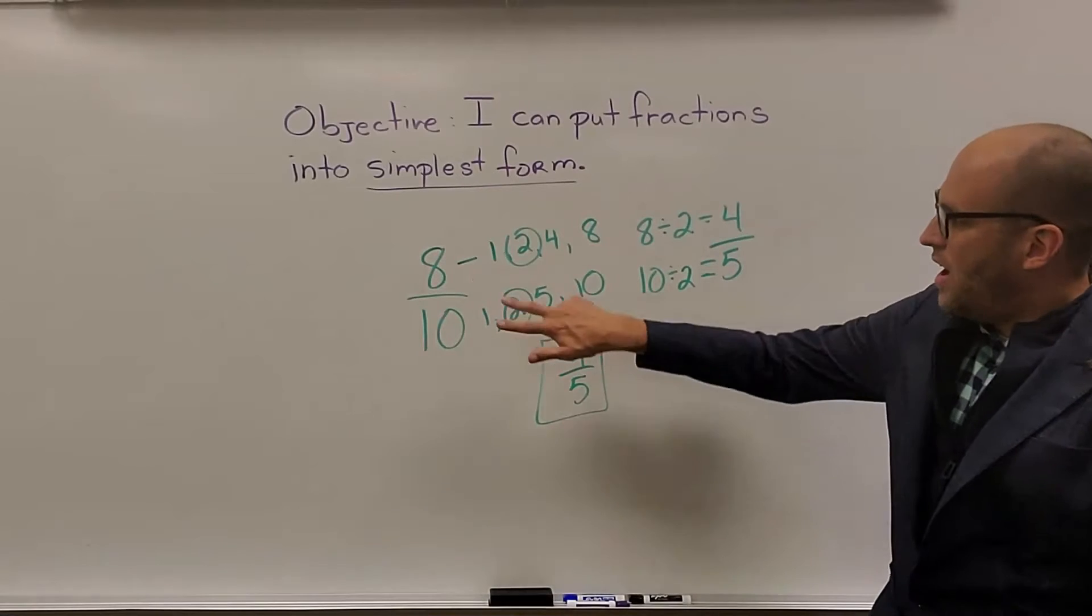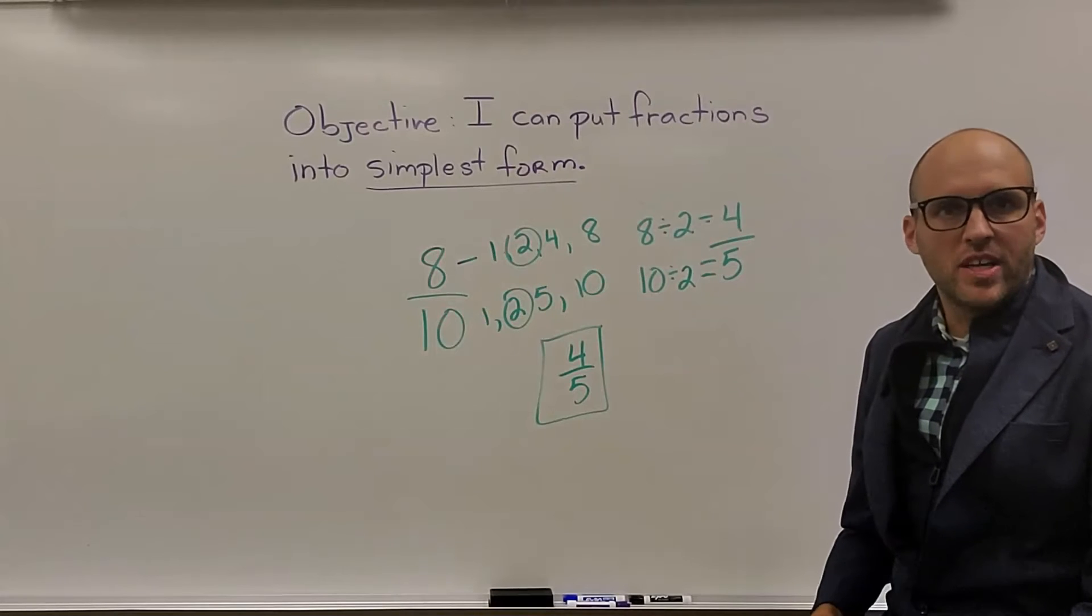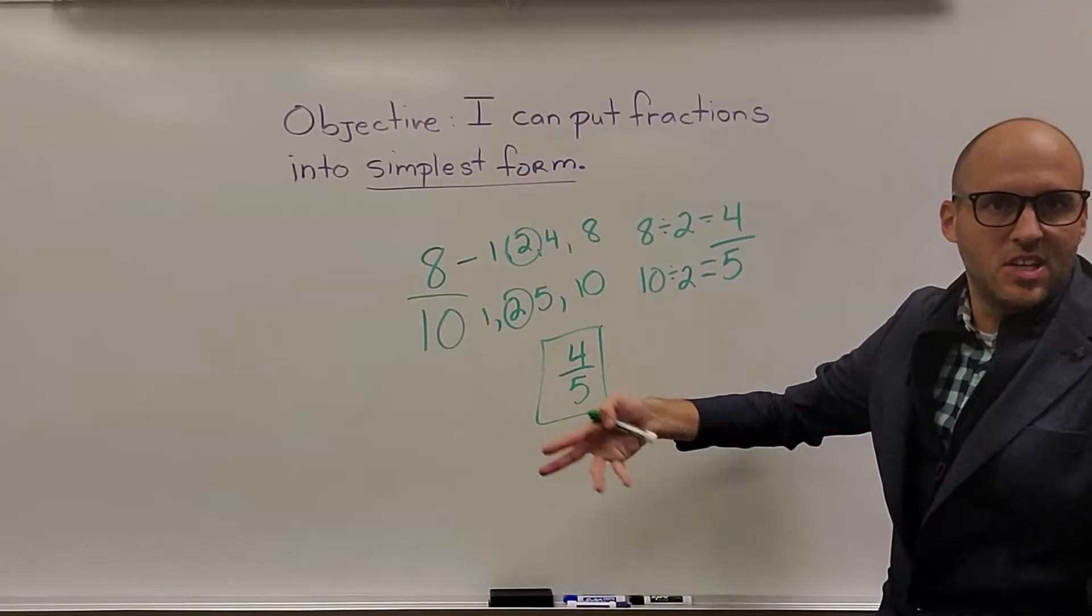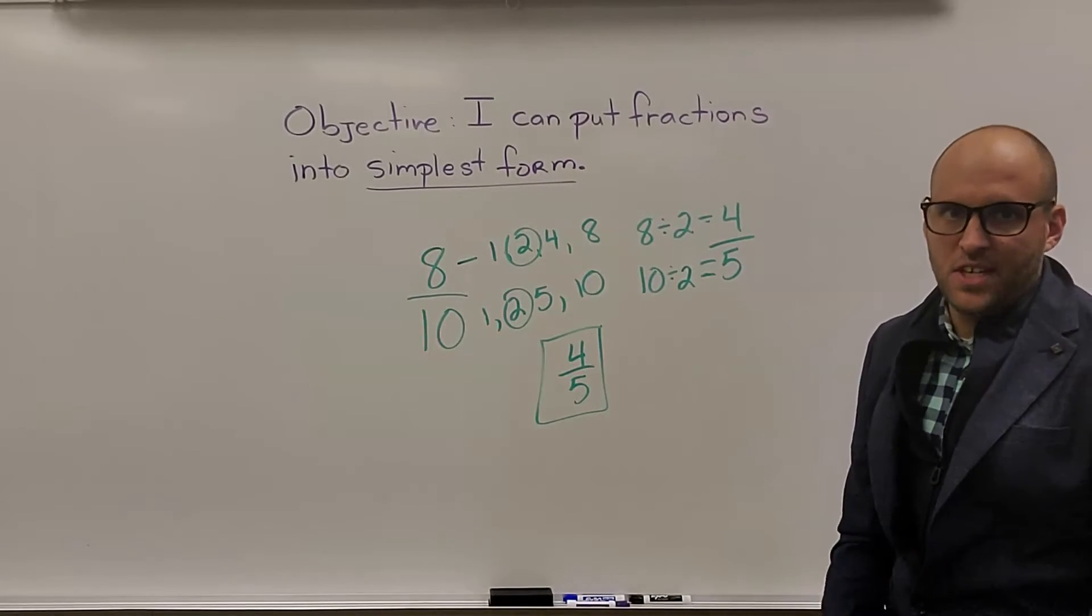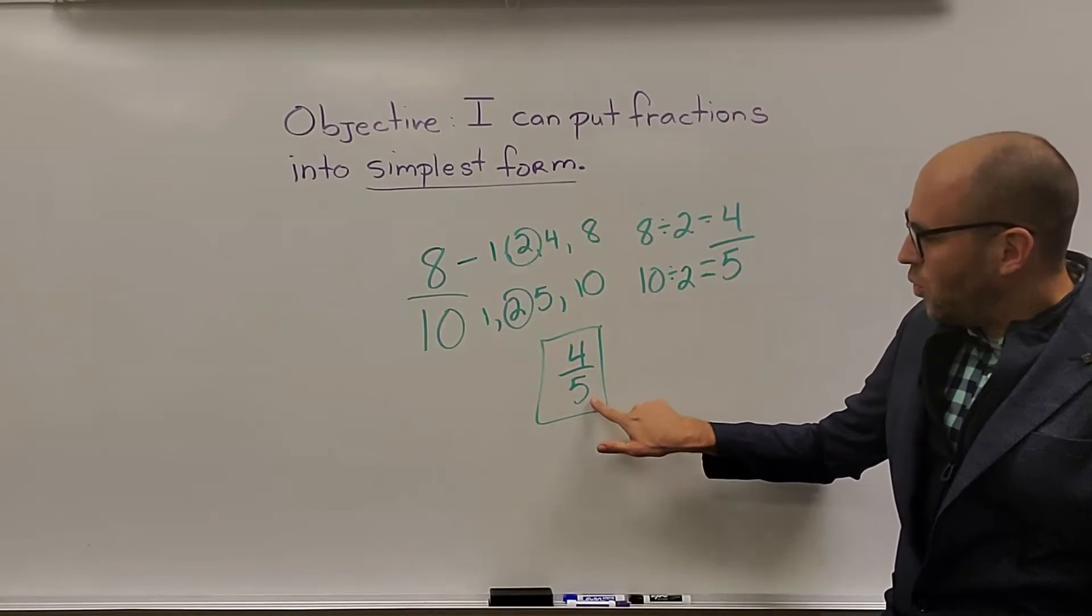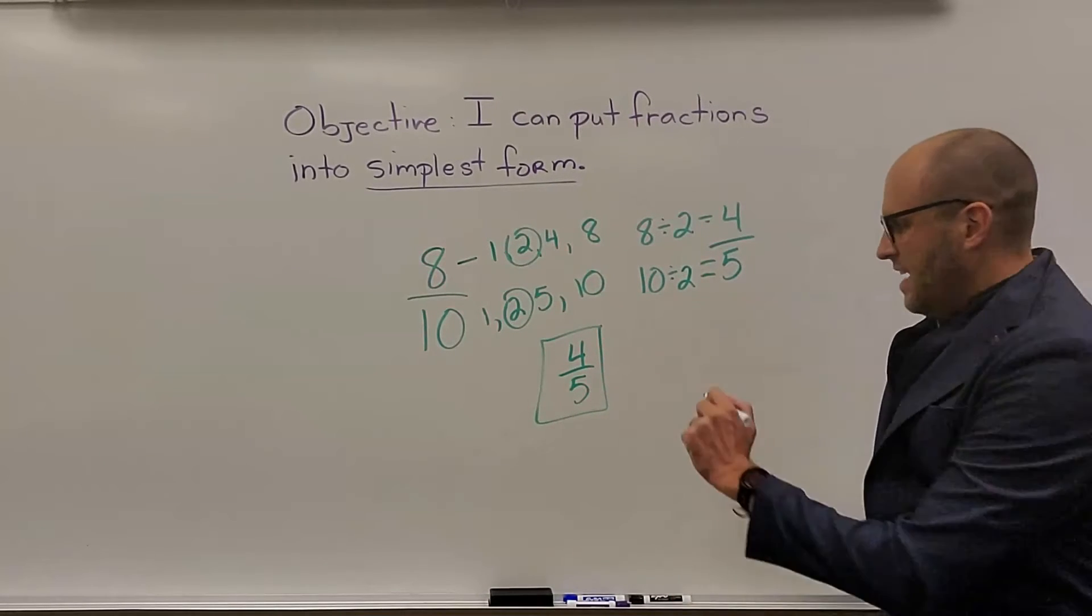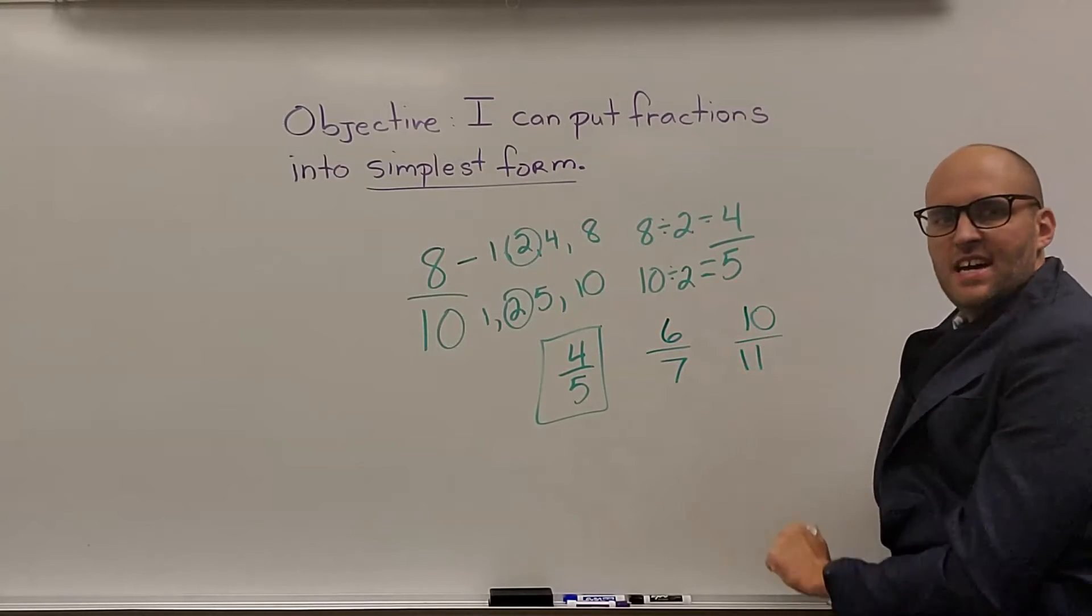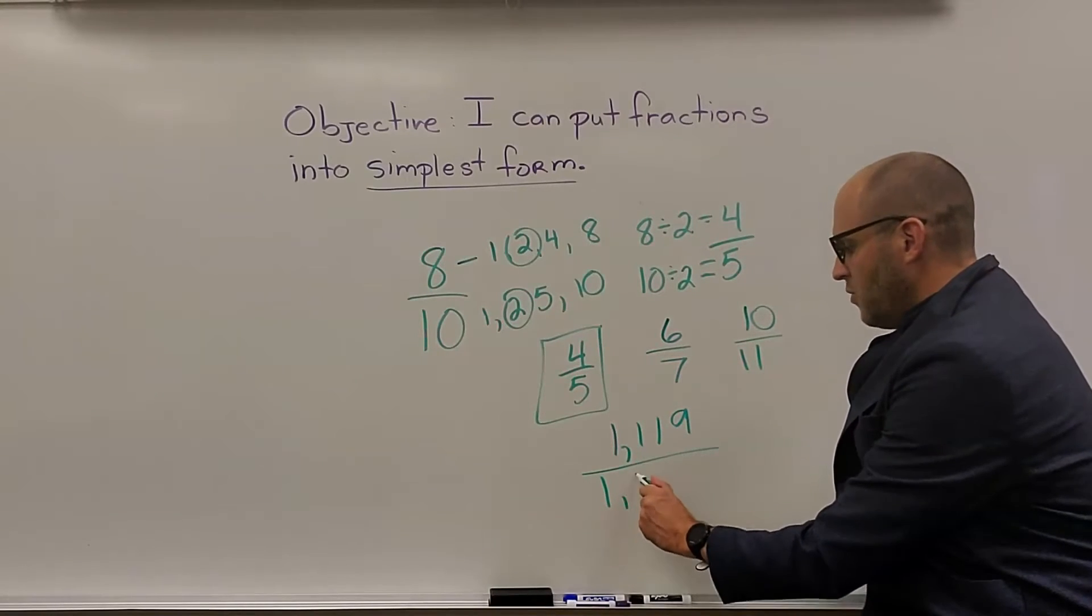A couple things to mention now. Anytime you see two even numbers, you can always divide by 2. 2 can always go into anything. So if you have no idea what to do, you can always keep dividing by 2 until the even numbers disappear. Not always going to work, especially if you have odd or an even and odd, but that's a good place to start here. The other thing you should notice here, if the numerator is 1 less than the denominator, you always know you're in simplest form. So 4 is 1 less than 5. 6 is 1 less than 7.